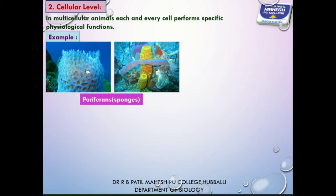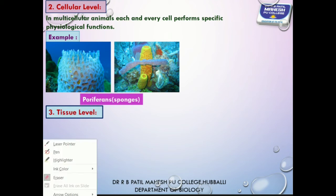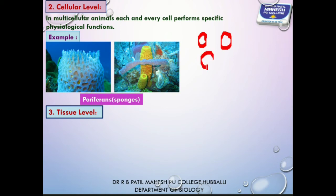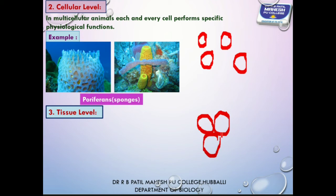Moving to the next level — tissue grade of organization. In cellular grade, a group of loosely arranged cells perform all life activities and tissues are absent. Whereas in tissue grade of organization, a group of similar cells aggregate to form tissues, and these tissues perform specific physiological functions of the body.